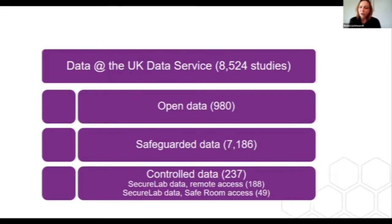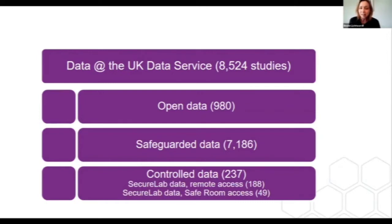The data at the UK Data Service — we hold approximately 8,500 studies in our data catalog, out of which 980 are open data sets, 7,186 are safeguarded data, and 237 are controlled data sets. The controlled data sets are especially interesting for my talk today. We distinguish between Secure Lab data, which are remote access data sets, and Secure Lab data which are safe room-only access data sets. The latter are only 49, but we have 188 which you can access remotely from your institution.